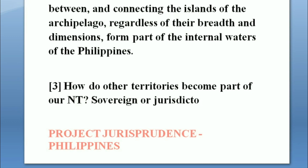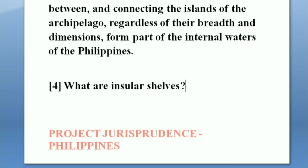Number four: what are insular shelves? Insular shelves, simply defined, is the zone surrounding an island extending from the line of permanent immersion to about 100 fathoms — 100 fathoms being approximately 183 meters or 600 feet of depth — where a marked or rather steep descent toward the great depths occurs. This is a very technical term defined under the law of the sea, but it is sometimes asked in law school.